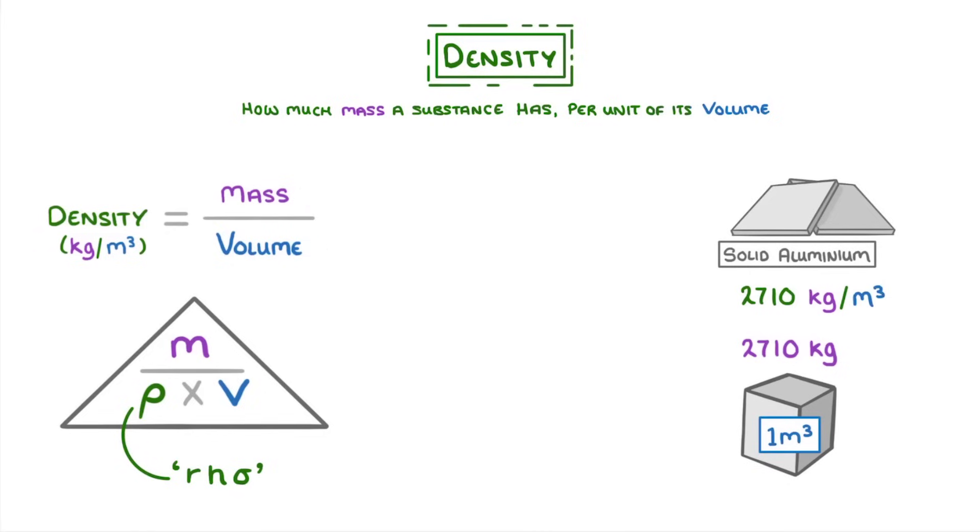We can also measure density in other units though, with the common one being grams per centimeter cubed. And if you want to convert the two, just remember that 1 gram per centimeter cubed is equivalent to 1000 kilos per meter cubed. So aluminium has a density of 2.71 grams per centimeter cubed.